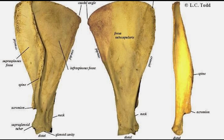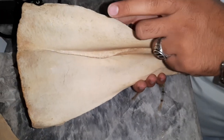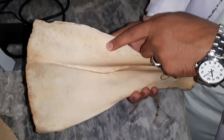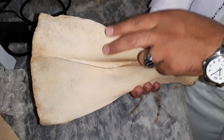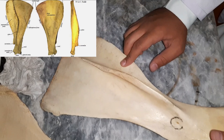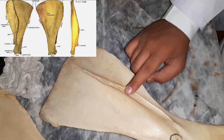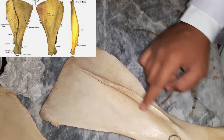To identify right or left, we should know that on the lateral side the less raised area is the cranial area and the more raised area is the caudal one. We should hold it parallel to our arm and we will be able to determine whether it is the right or left scapula.